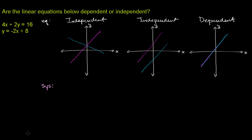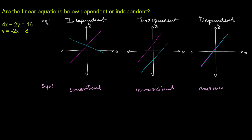If it has no solutions, you call it inconsistent. The parallel lines case is the only one with no solutions — so this is inconsistent. The intersecting case has exactly one solution — this is consistent. And the same-line case has an infinite number of solutions, but it's still consistent — you have at least one solution.